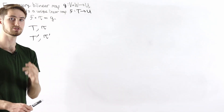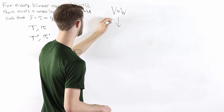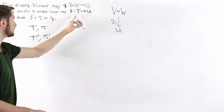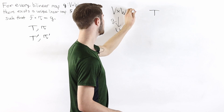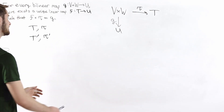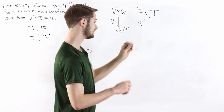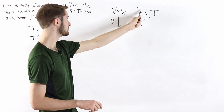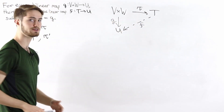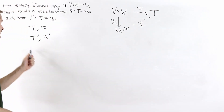To visualize the universal property, consider the diagram: we have the Cartesian product V cross W, a bilinear map tau into the tensor product T, and any bilinear map g from V cross W into another vector space U. The universal property guarantees a unique linear map f from T to U such that f composed with tau equals g — meaning either path in the diagram from V cross W to U gives the same function.